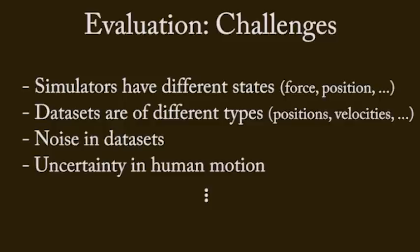Sources of difficulty include differences in how simulators represent the simulation state, differences in what types of information the real-world data captures, noise in the datasets, and the fundamental uncertainty of human motion.